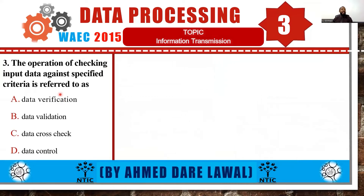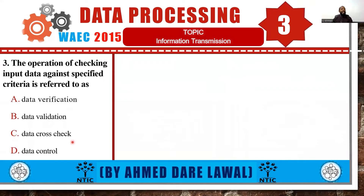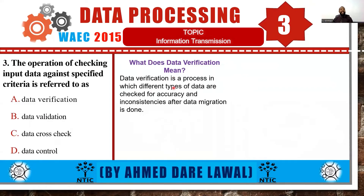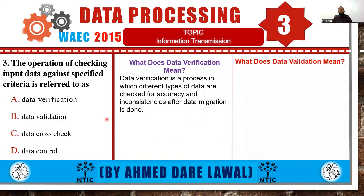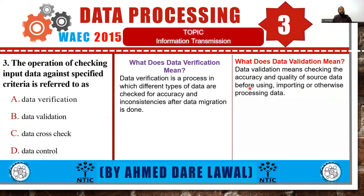Looking at question 3, we need to first look at what data verification is. Data verification is a process in which different types of data are checked for accuracy and inconsistency after data migration is done. Now let's look at data validation, which means checking the accuracy and quality of source data before using, importing, or otherwise processing data — basically checking your input before it's actually allowed, and it applies to specified criteria.